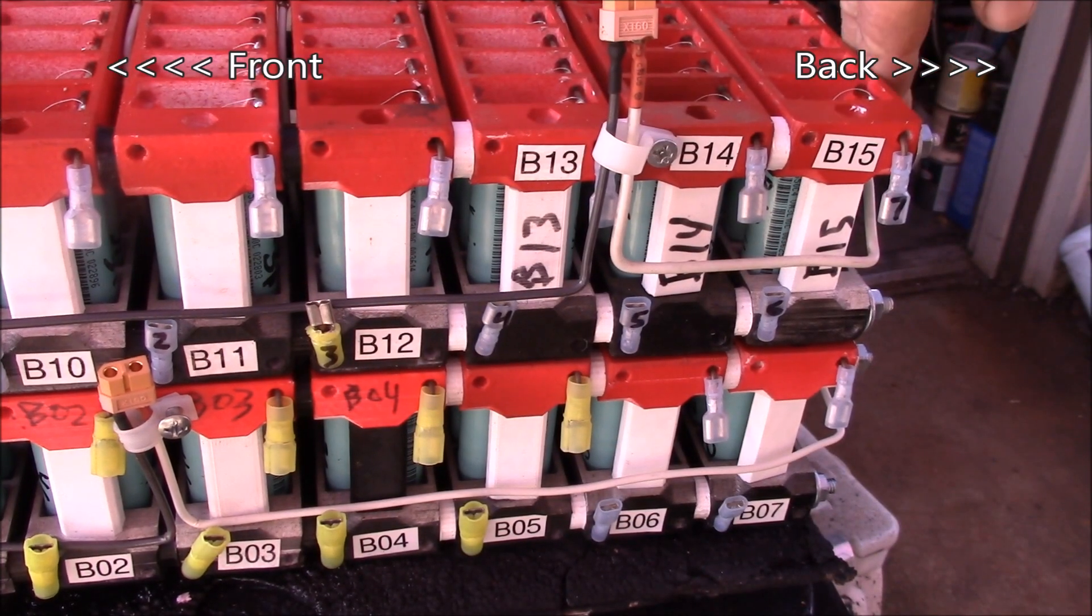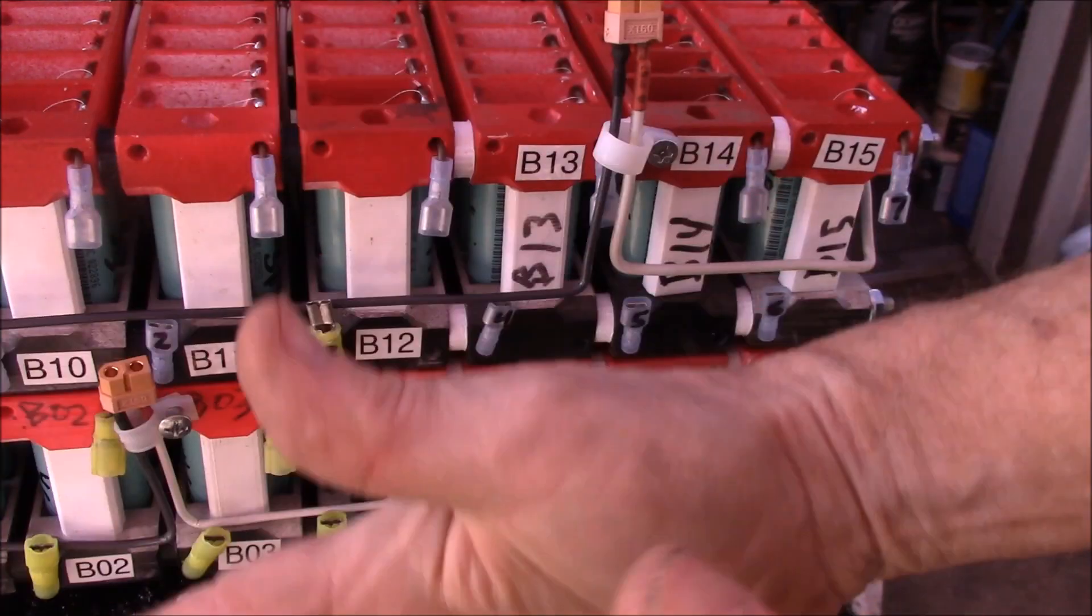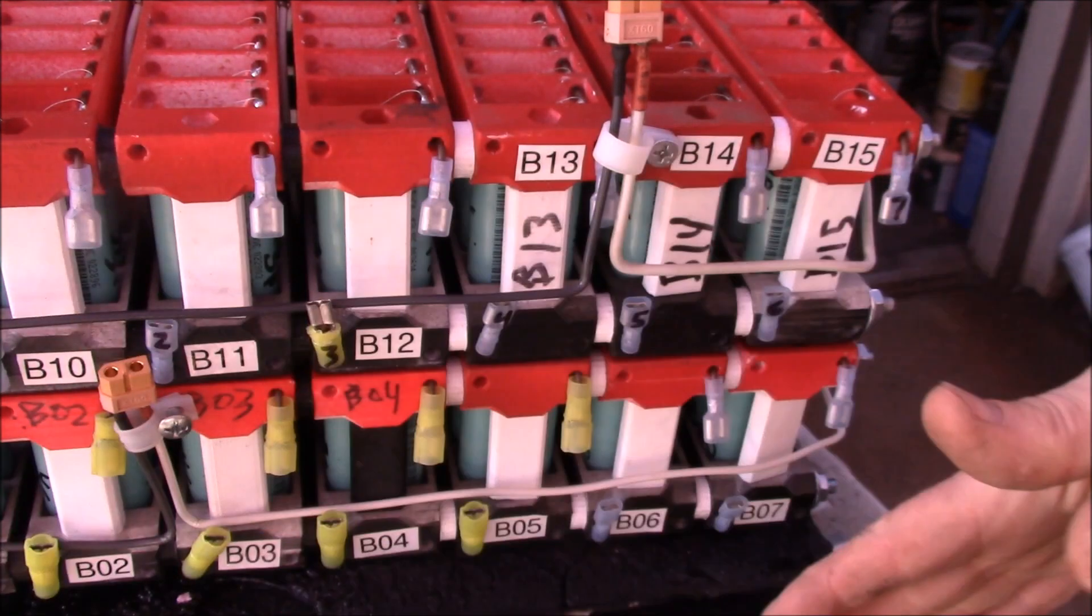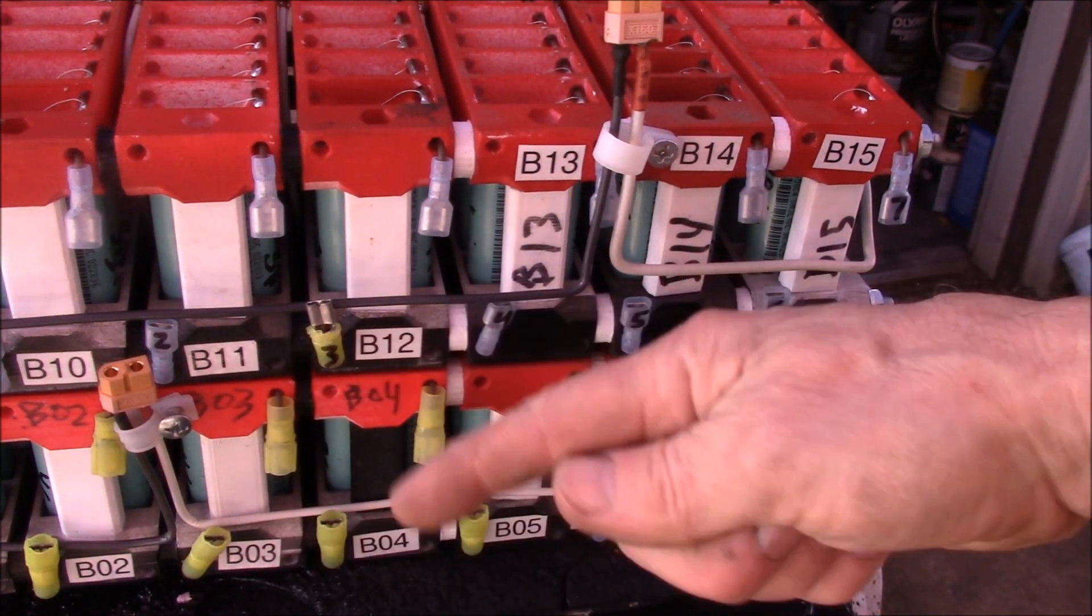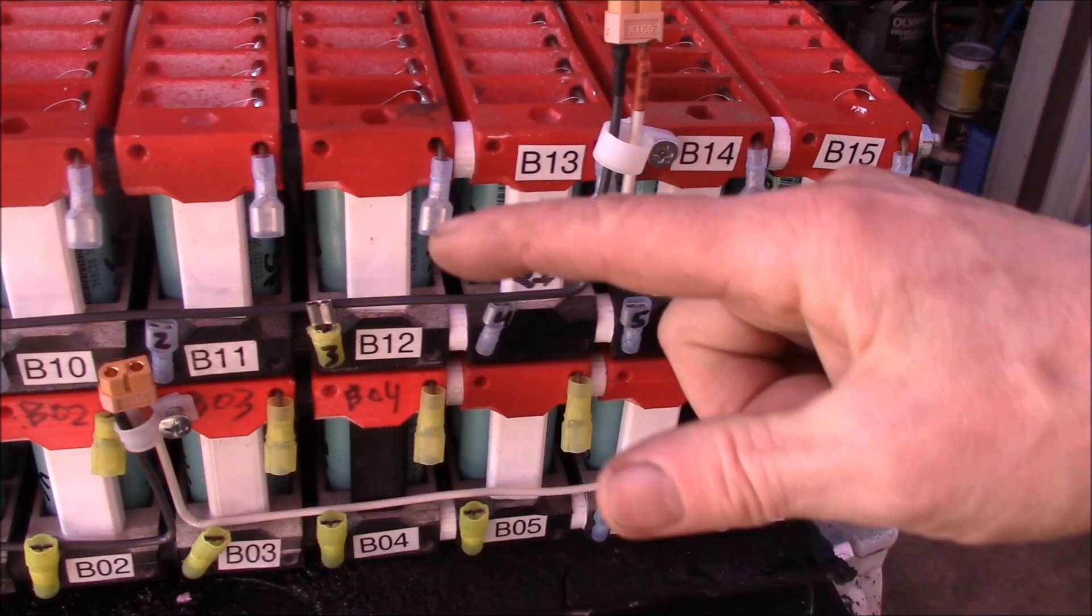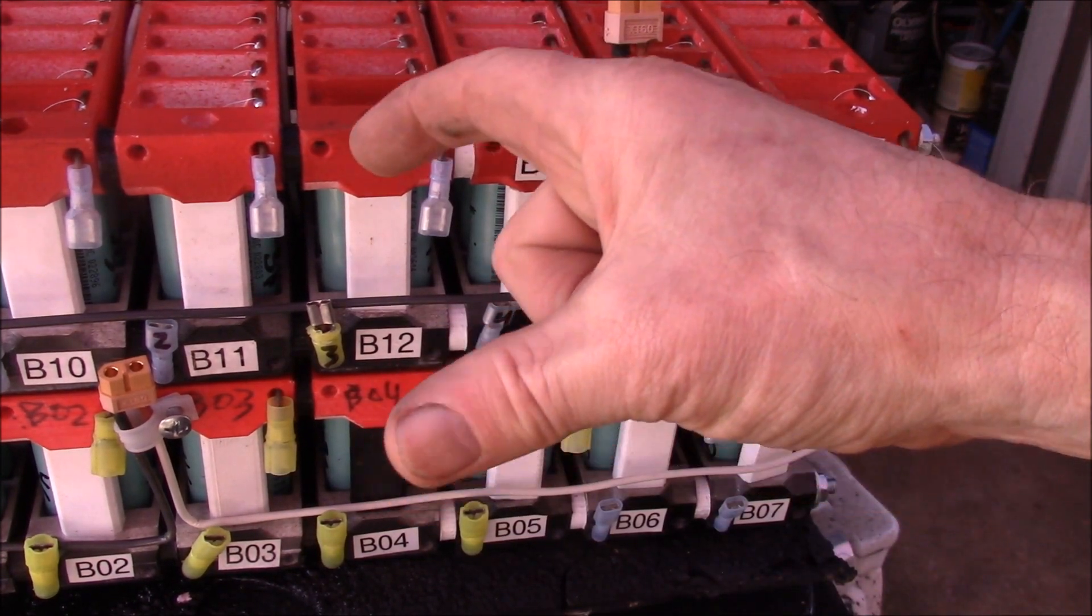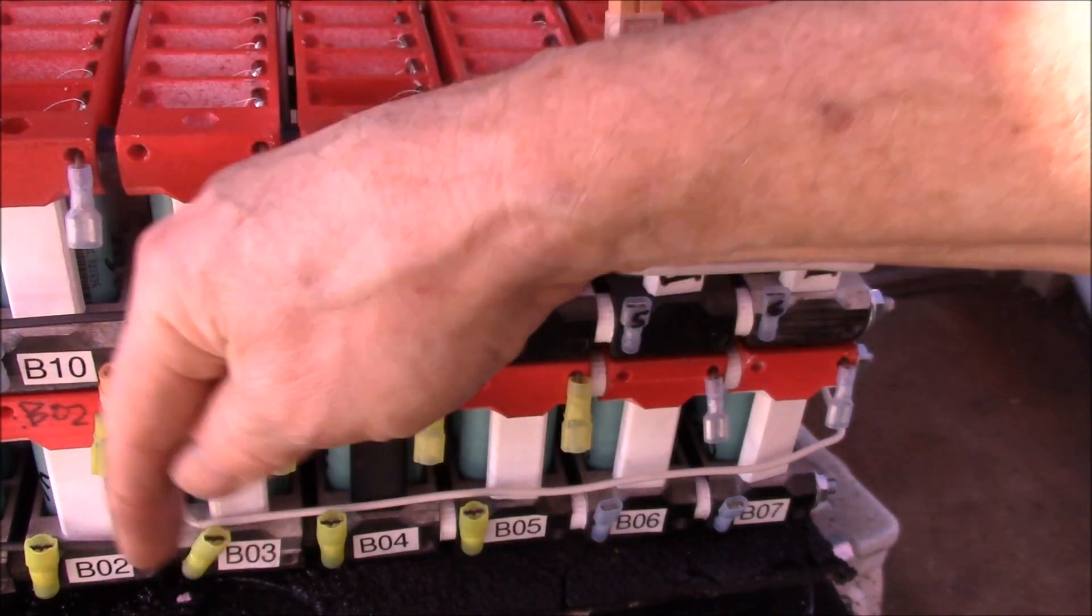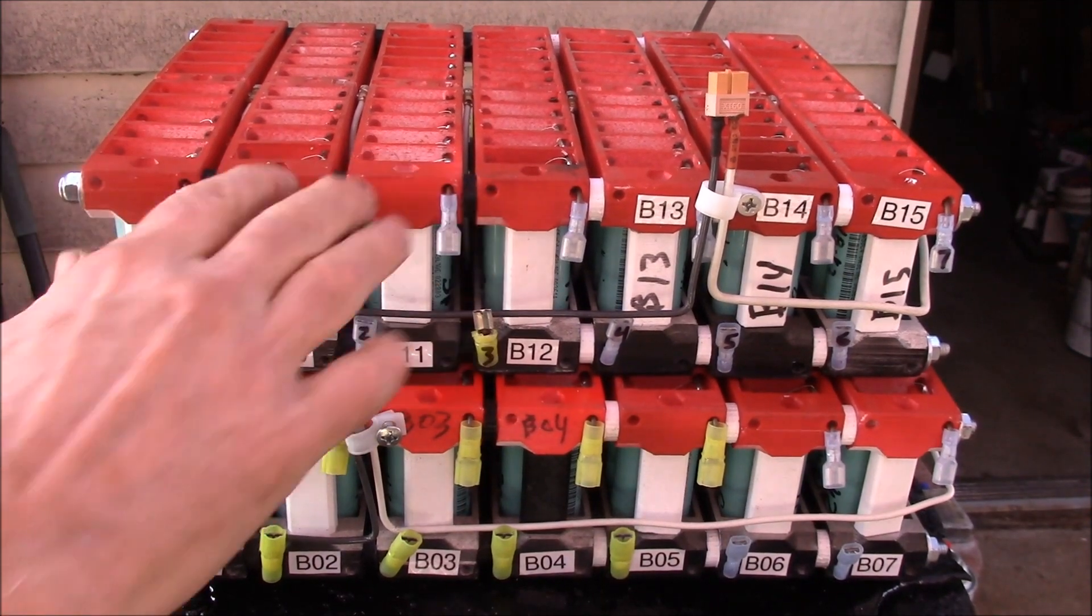I think the way they'll fit in the shelf is they'll be turned this way, so this will be the front of the shelf and the back of the shelf, and then I'll have another two batteries on this side facing in, and then I'll do all my connections here in the middle. So I think that'll leave me enough of a gap here to do all the balance cables and the power connections here in the center.